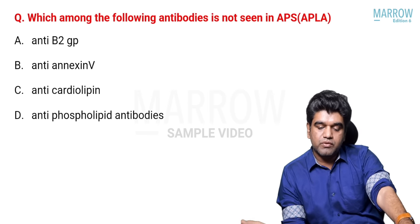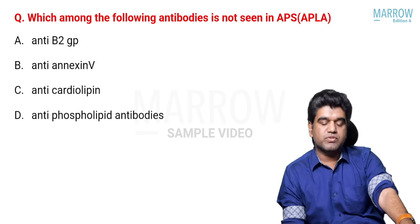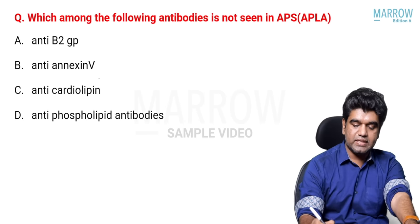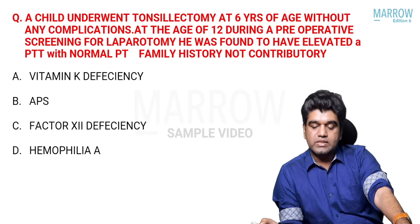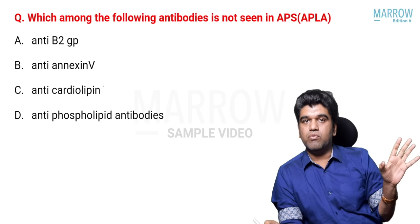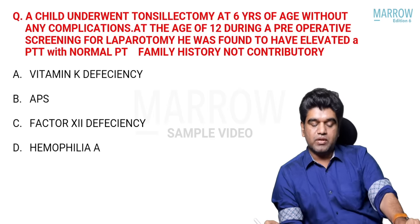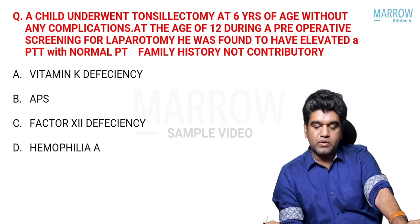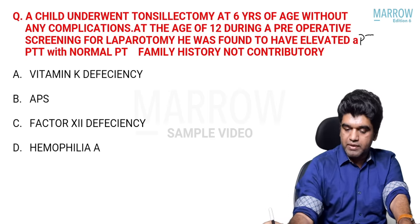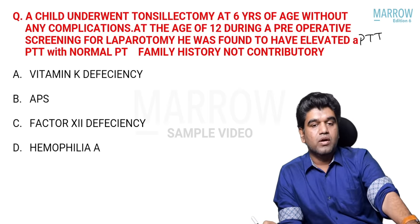Question number one for the exam: which among the following antibodies is not seen in APLA, antiphospholipid antibody syndrome, now called APS antiphospholipid syndrome? Options are anti-beta-2-glycoprotein, anti-annexin, anti-cardiolipin, and anti-phospholipid antibody. Question two: a child underwent tonsillectomy at six years of age without any complications. At the age of 12, during pre-operative screening for laparotomy, he was found to have elevated APTT with normal PT, family history not contributory. What is the diagnosis?